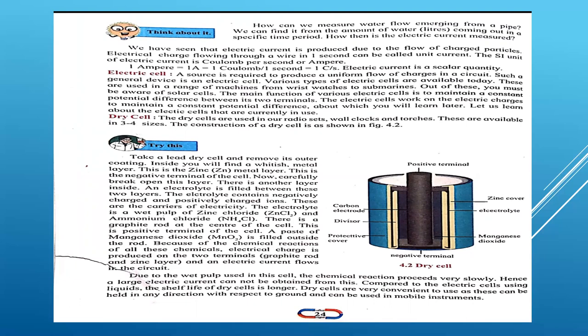When you break that whitish zinc layer, you will find another layer inside. Also inside, you will find the electrolyte which is filled between these two layers. The electrolyte contains negative and positive charges. This electrolyte is a mixture of two chemicals: zinc chloride (ZnCl₂) and ammonium chloride (NH₄Cl). Also, there is a graphite rod inside — that black color part — which is the positive terminal of the cell.